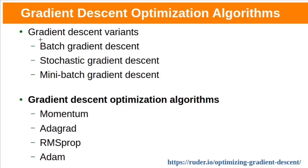So far we have seen the gradient descent variants: batch gradient descent, stochastic gradient descent, and mini-batch gradient descent. We are now going to see gradient descent optimization algorithms: Momentum, Adagrad, RMSprop, and Adam.